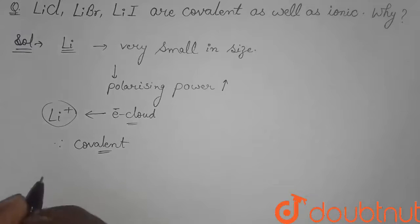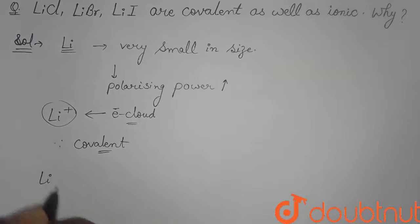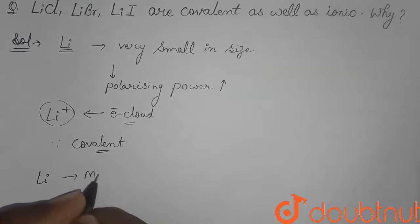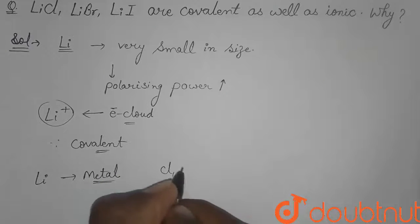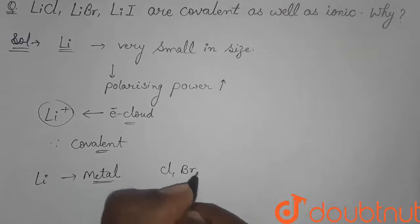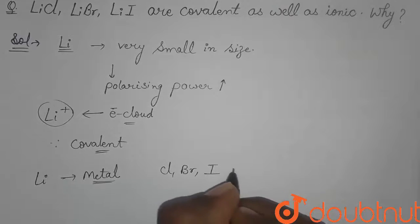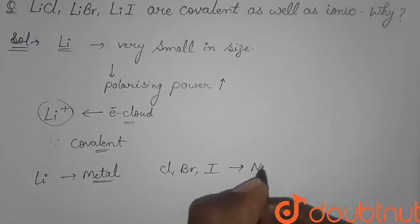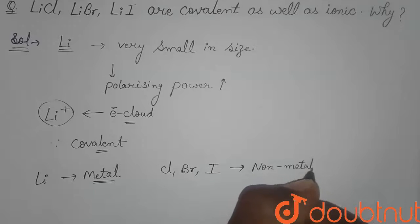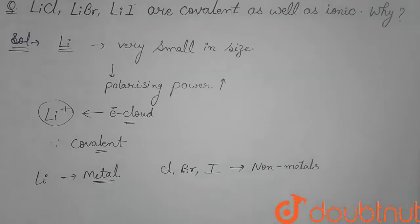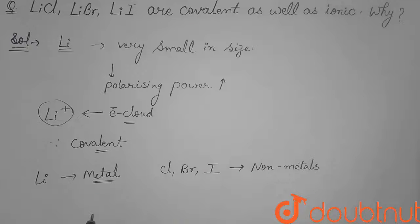Since we know that lithium is in a metallic group, so it is a metal. And chloride, bromide and iodide are halogen groups and are non-metals. We all know that when metals and non-metals combine together, it forms a compound which is ionic in nature.